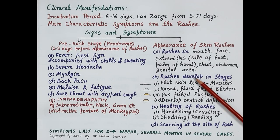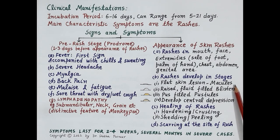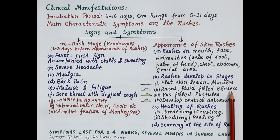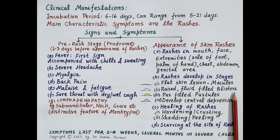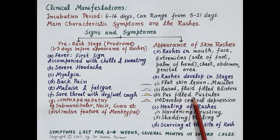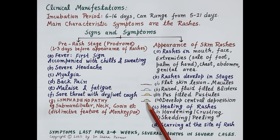Once rashes are produced, they develop in different stages. Initially, rashes are observed as flat skin lesions termed macules. In the next stage, these rashes get filled with a clear fluid and are termed blisters. These macules become raised fluid-filled blisters. After some time, these blisters develop into pus-filled lesions called pustules, and finally a central depression — a button — develops in these rashes. This is a fully developed rash.